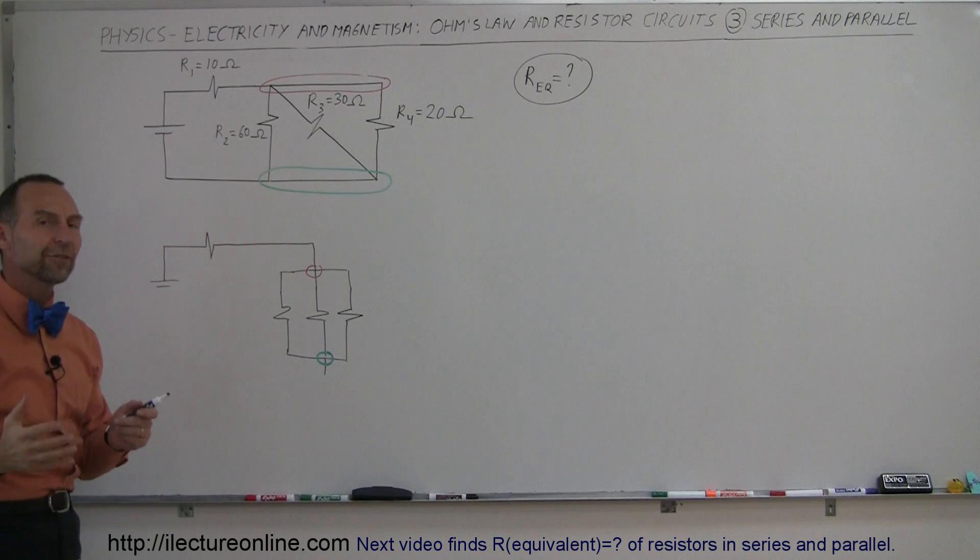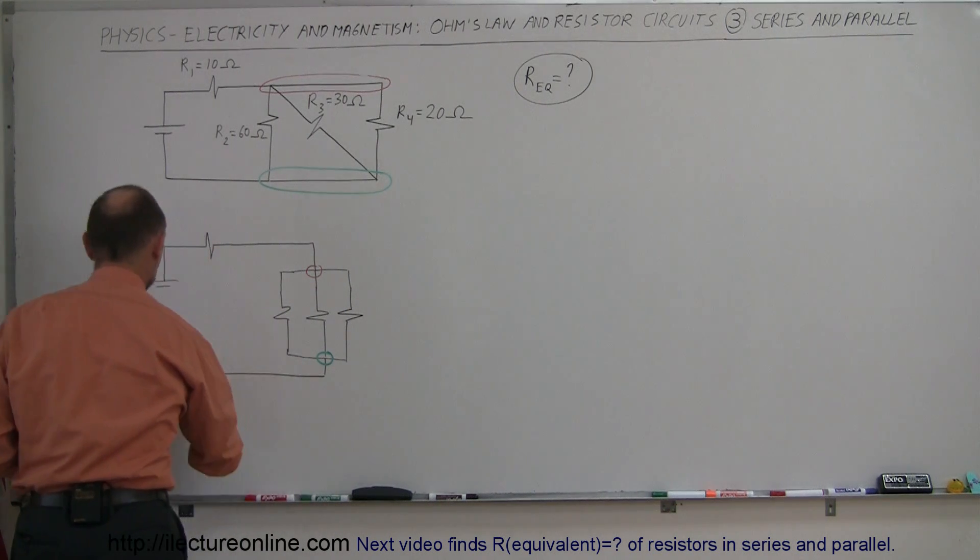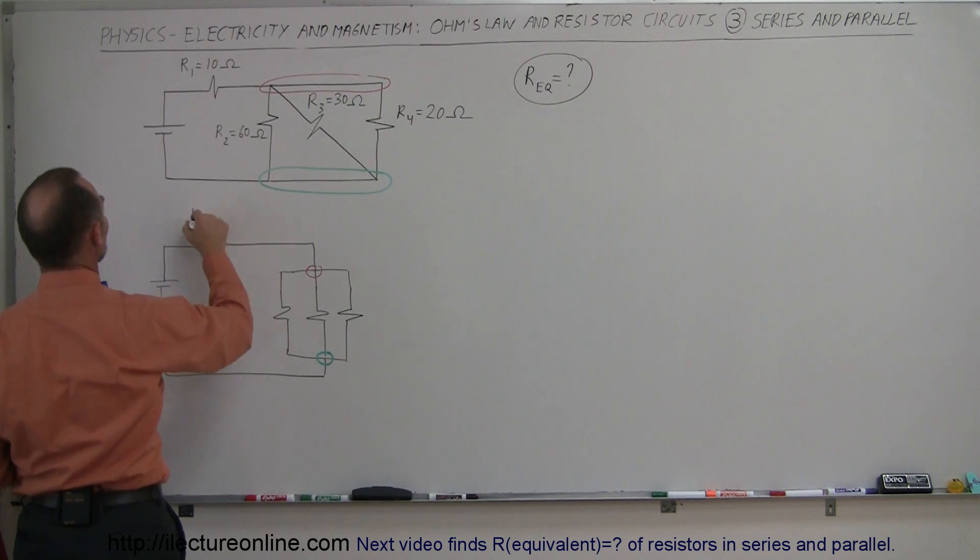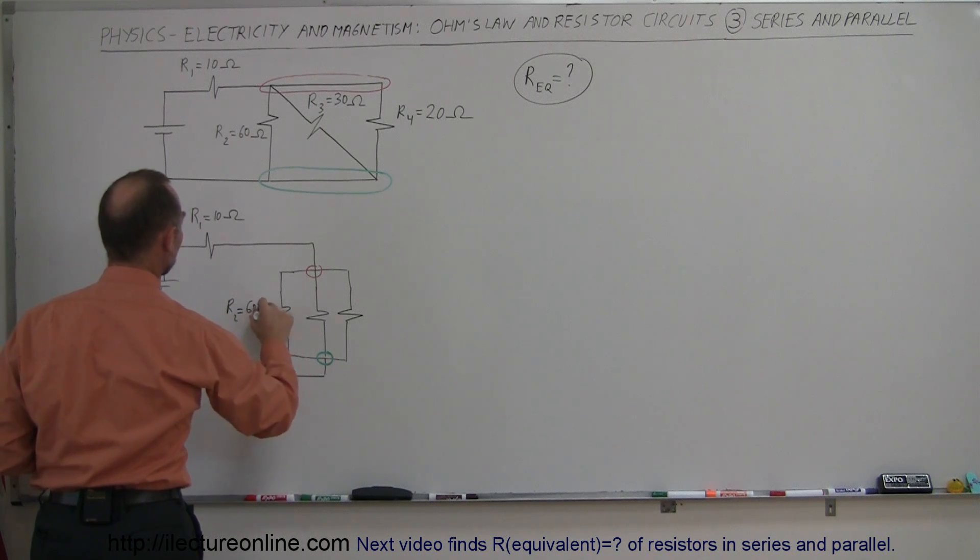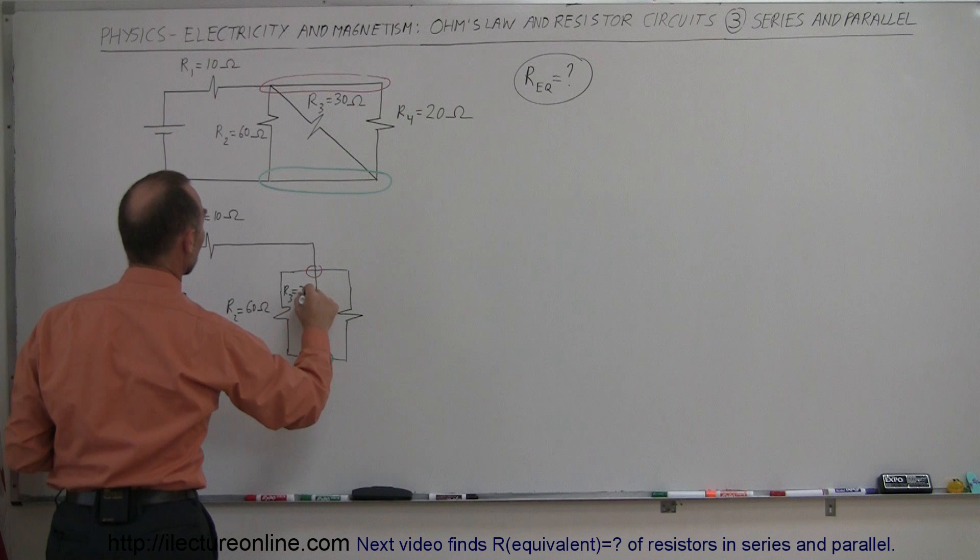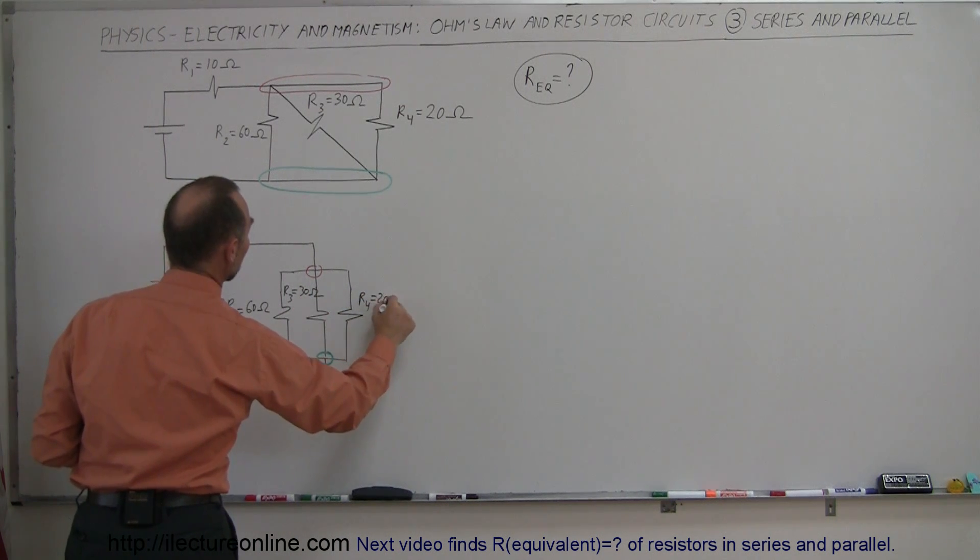Notice that this junction can be considered to be what I circled in green there. So now this looks like a very different circuit, but in actuality it's the exact same one as before. No difference whatsoever. We can put in the resistor values, so this is R1 equals 10 ohms. Here we have R2 equals 60 ohms, R3 equals 30 ohms, and finally we have R4 equals 20 ohms.